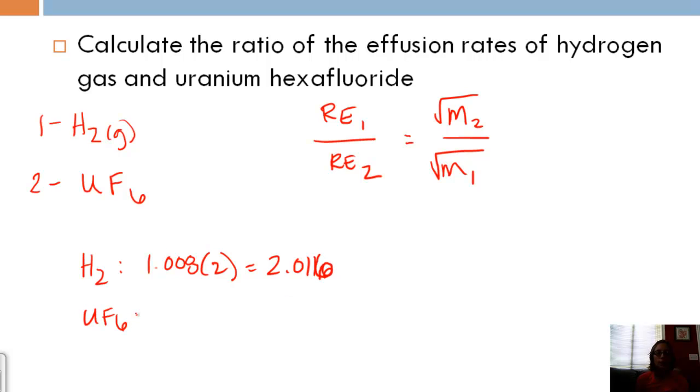And for UF6, let's see, uranium is 238 plus 6 times 19, and that's going to give us a total of 352. So now I can just plug those in. And so if I do the math, I've already done it for you, I get 13.2. There are no units. What this means is that the rate of effusion of hydrogen is about 13 times the rate of effusion of uranium hexafluoride. Makes sense, it's a lighter particle, so it's going to pass through a lot more quickly.